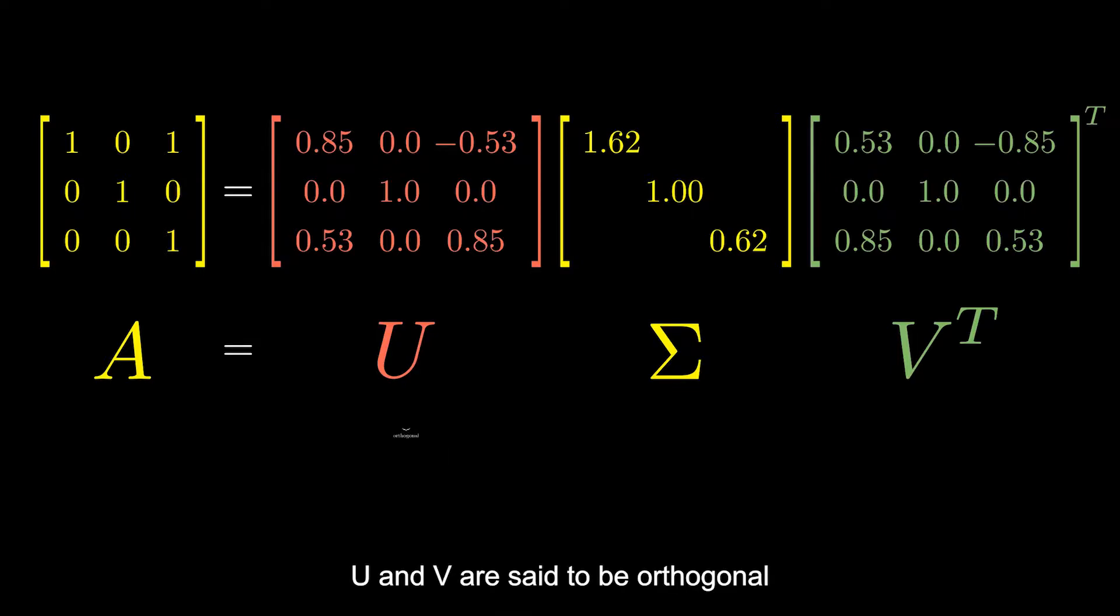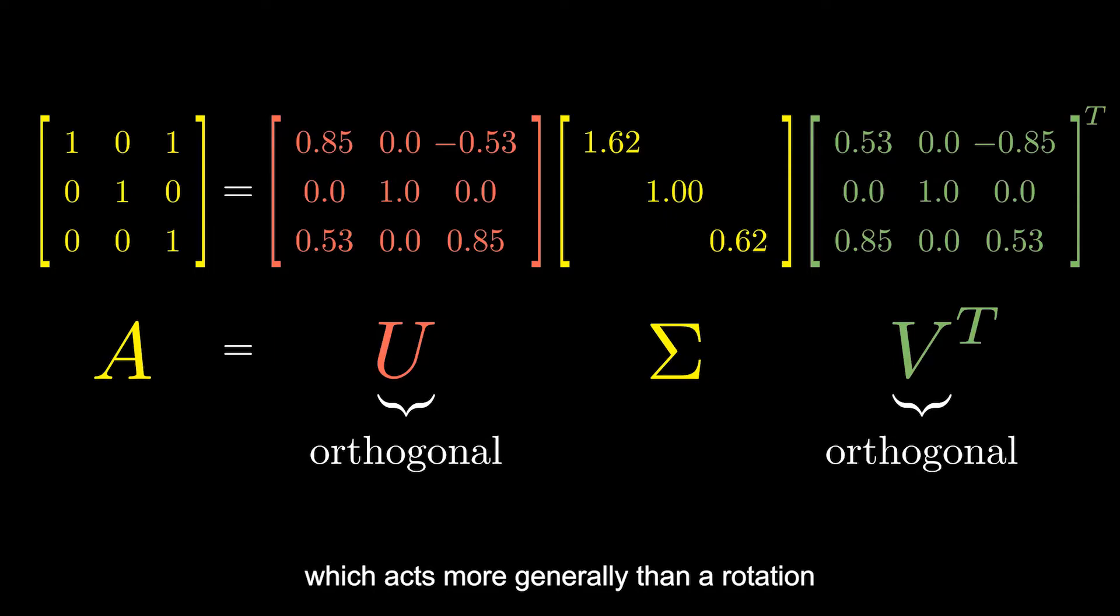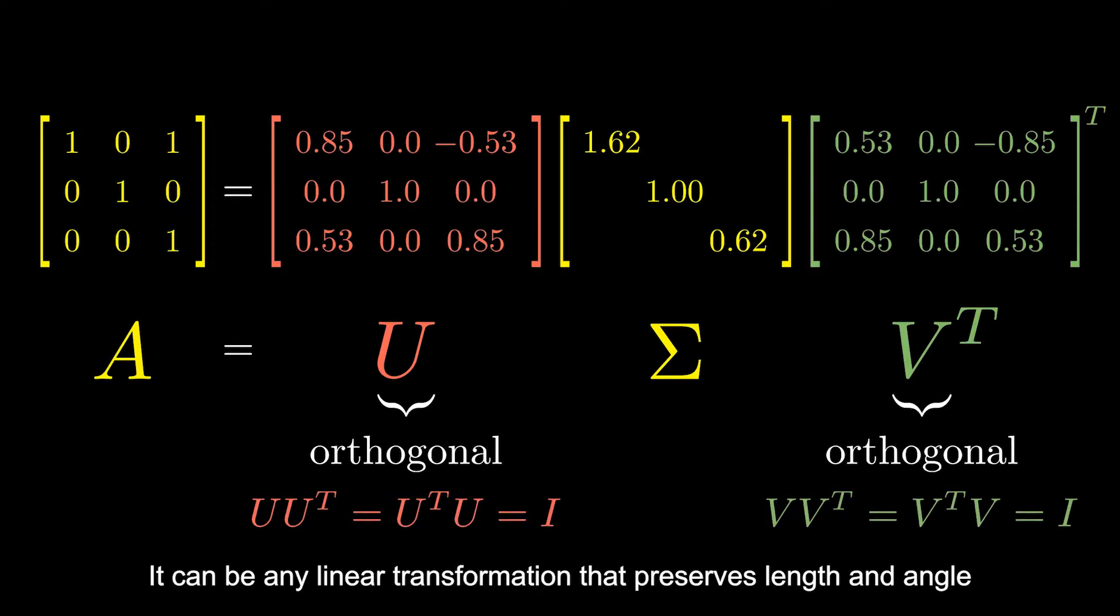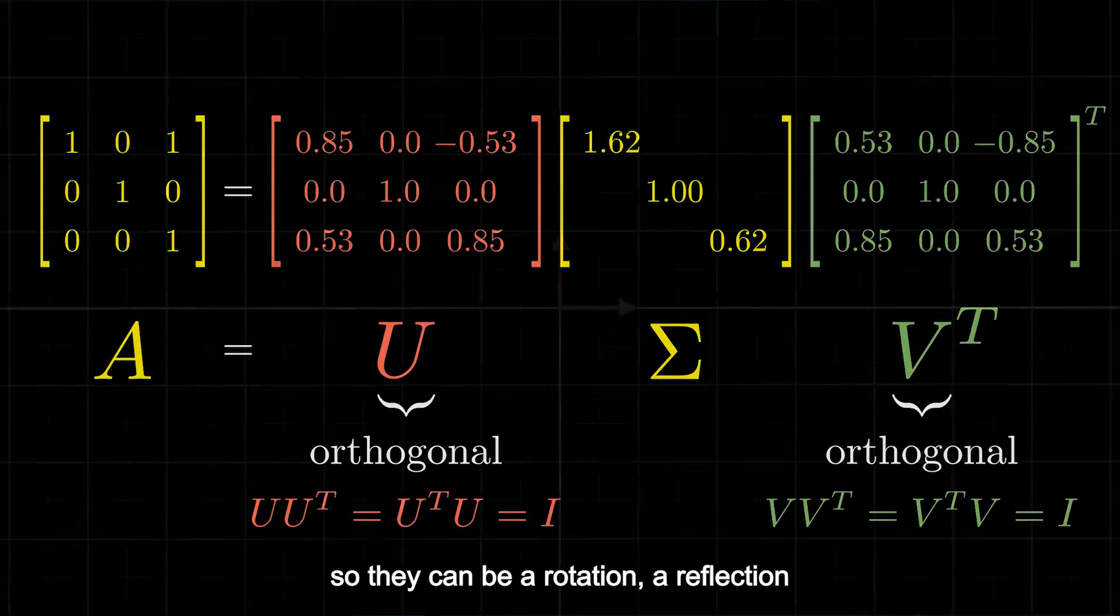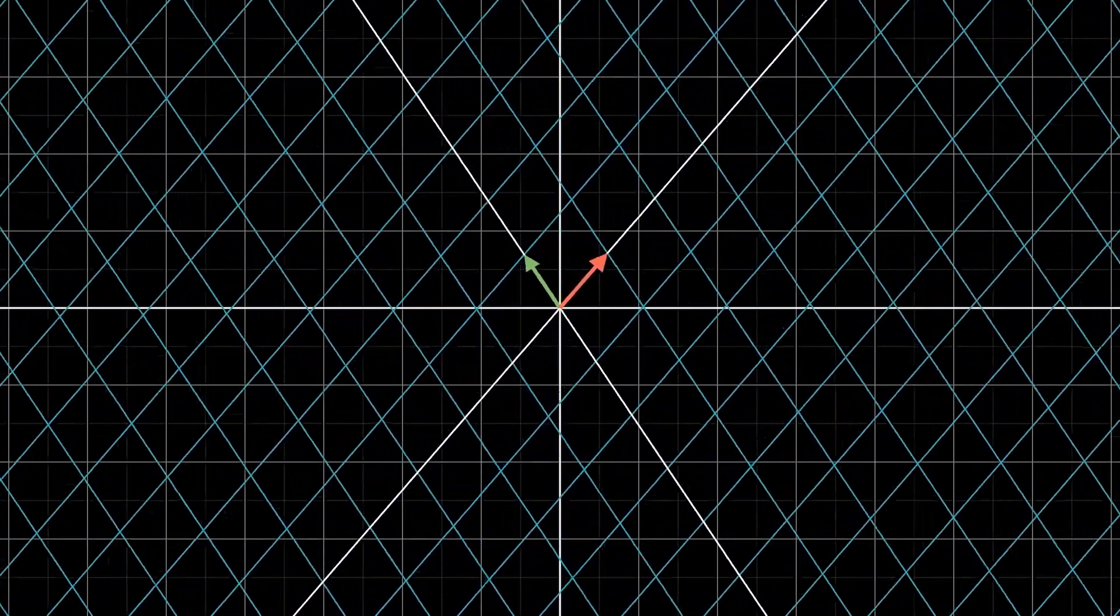U and V are said to be orthogonal, which acts more generally than a rotation. They can be any linear transformation that preserves length and angle, so they can be a rotation, reflection, or compositions of them.